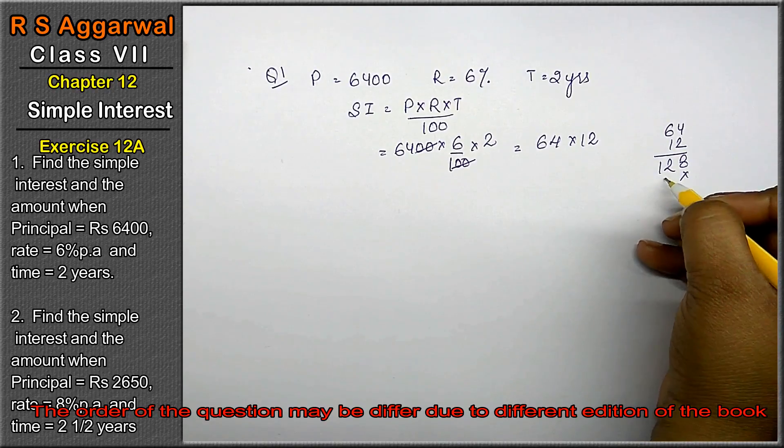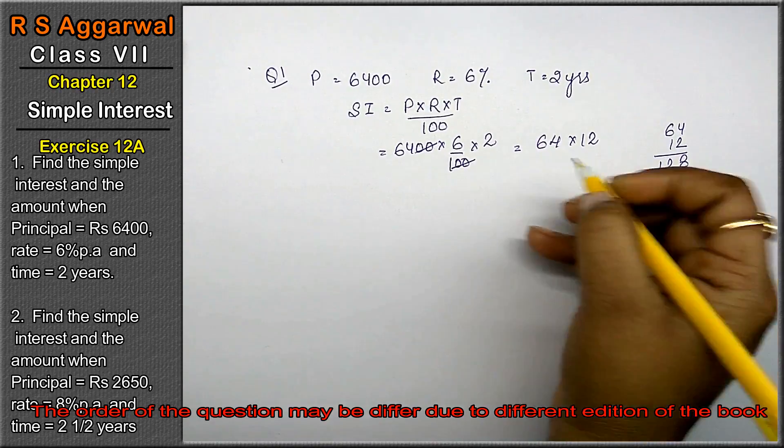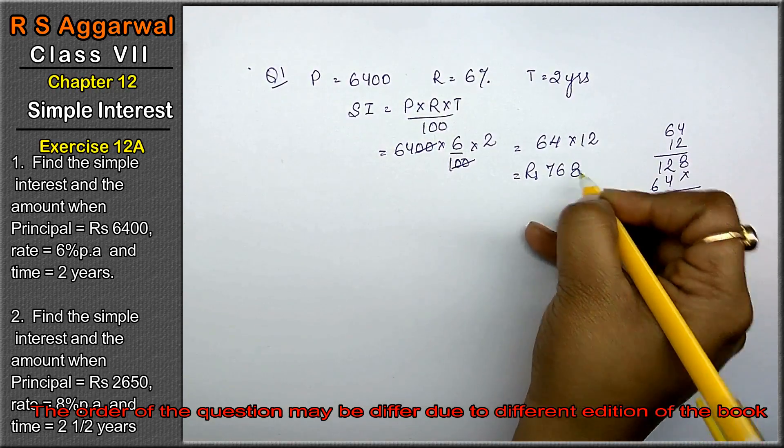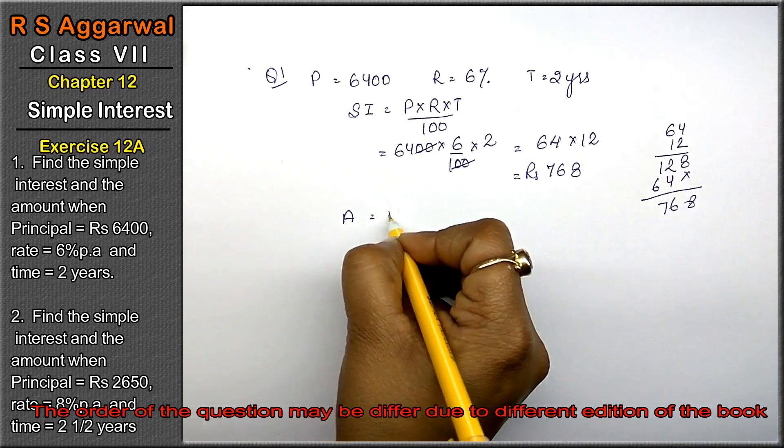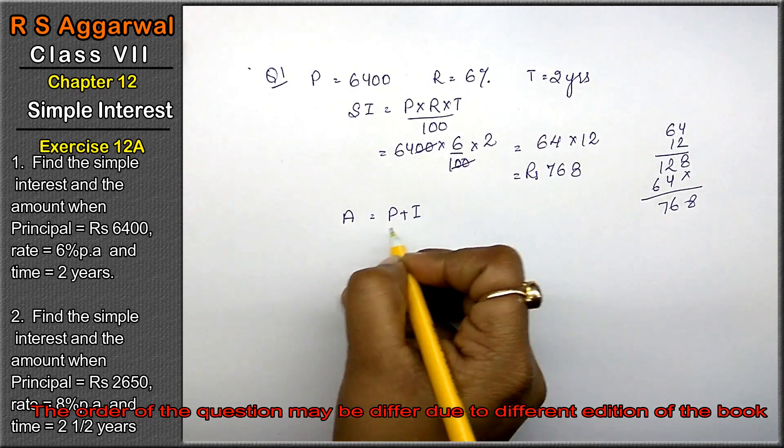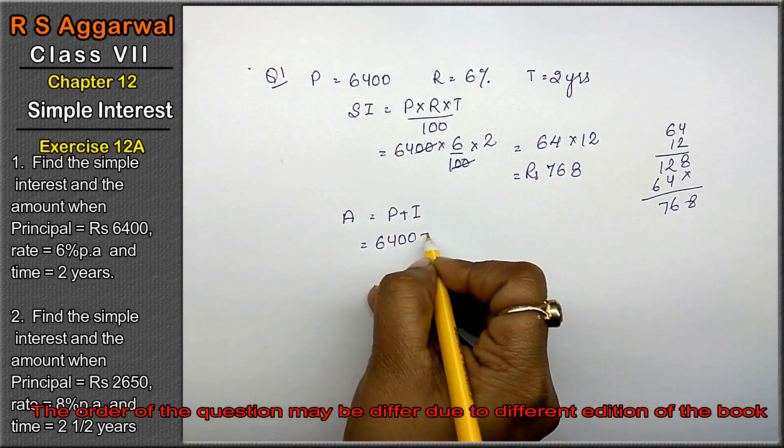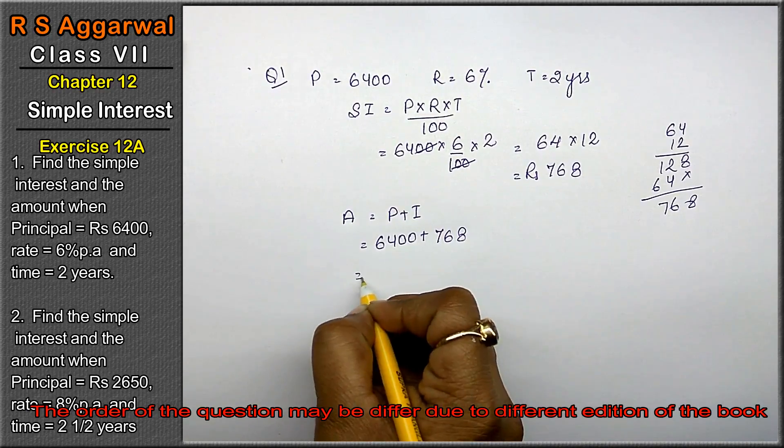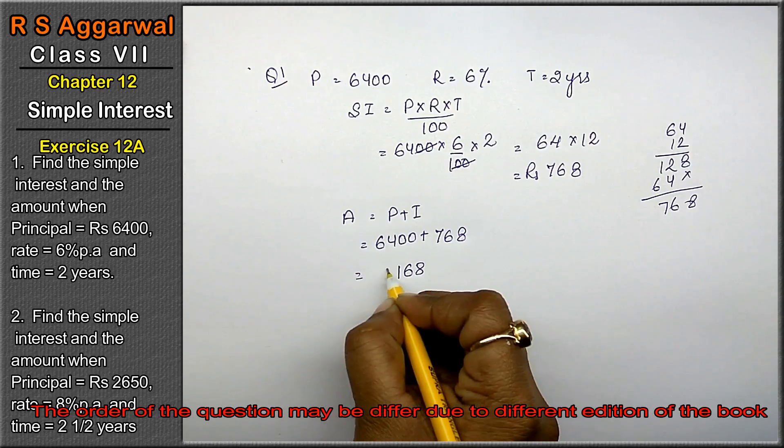64 into 12 equals 768. So rupees 768 is the answer. Now we have to calculate the amount. Amount ka formula hota hai P plus I. P is 6400 and I is 768. Adding these gives 7168.